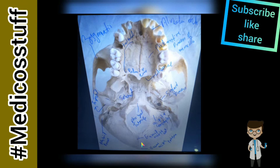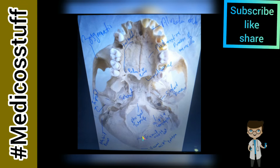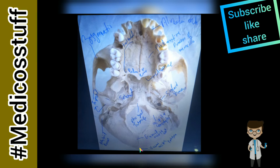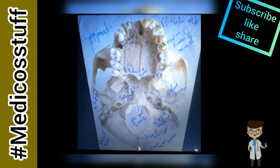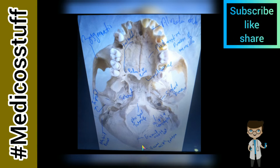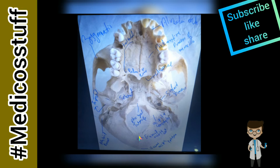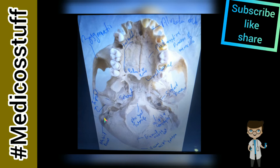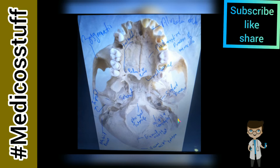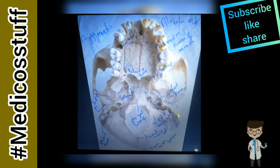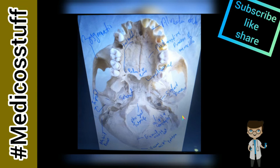On the occipital bone you will see this part — it is known as the external occipital crest. Immediately below the foramen magnum there is the external occipital crest. Totally at the back of the occipital bone you can see this, which is known as the external occipital protuberance. These large processes are very important in OSCEs and in viva — they are known as the mastoid process.